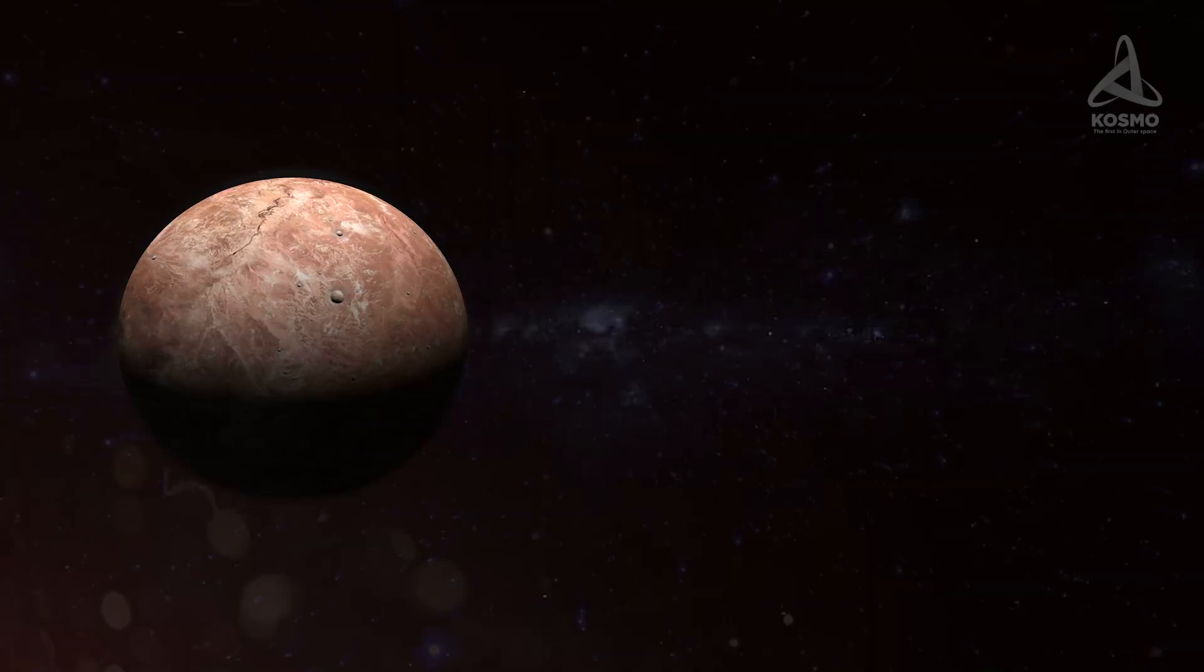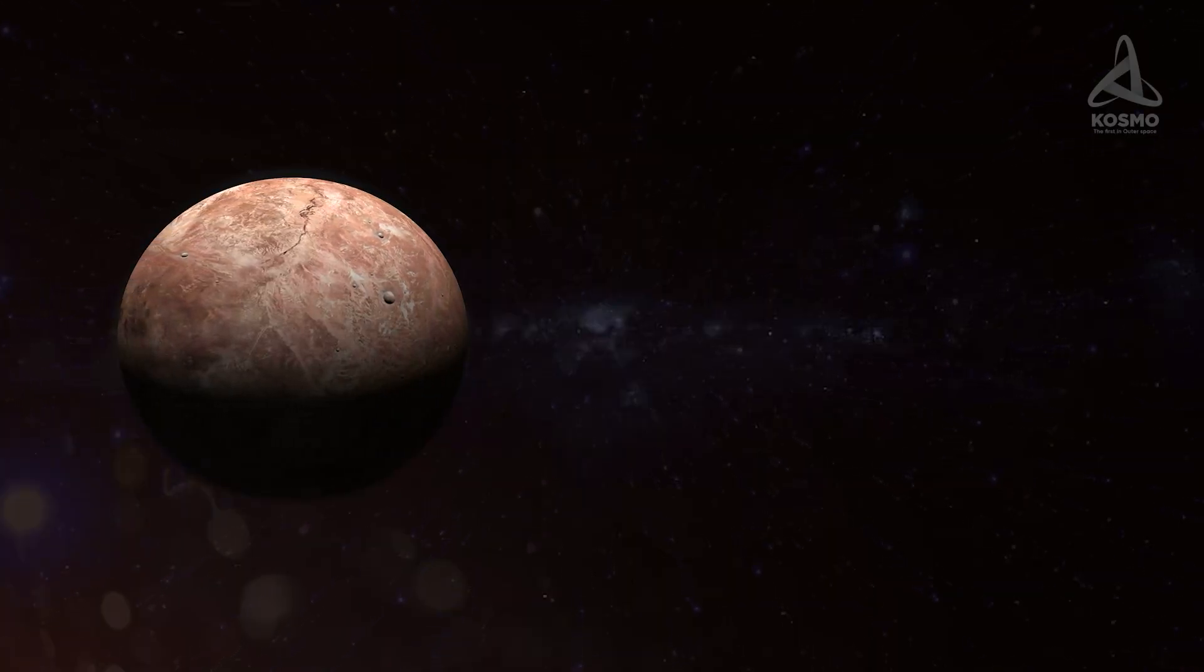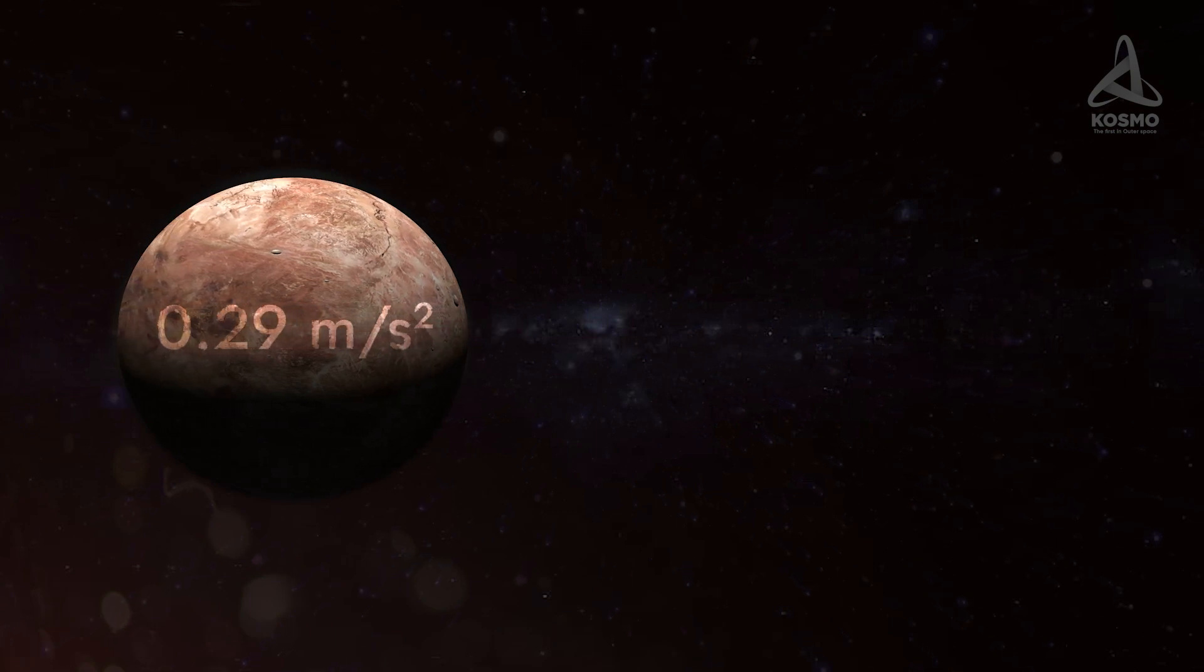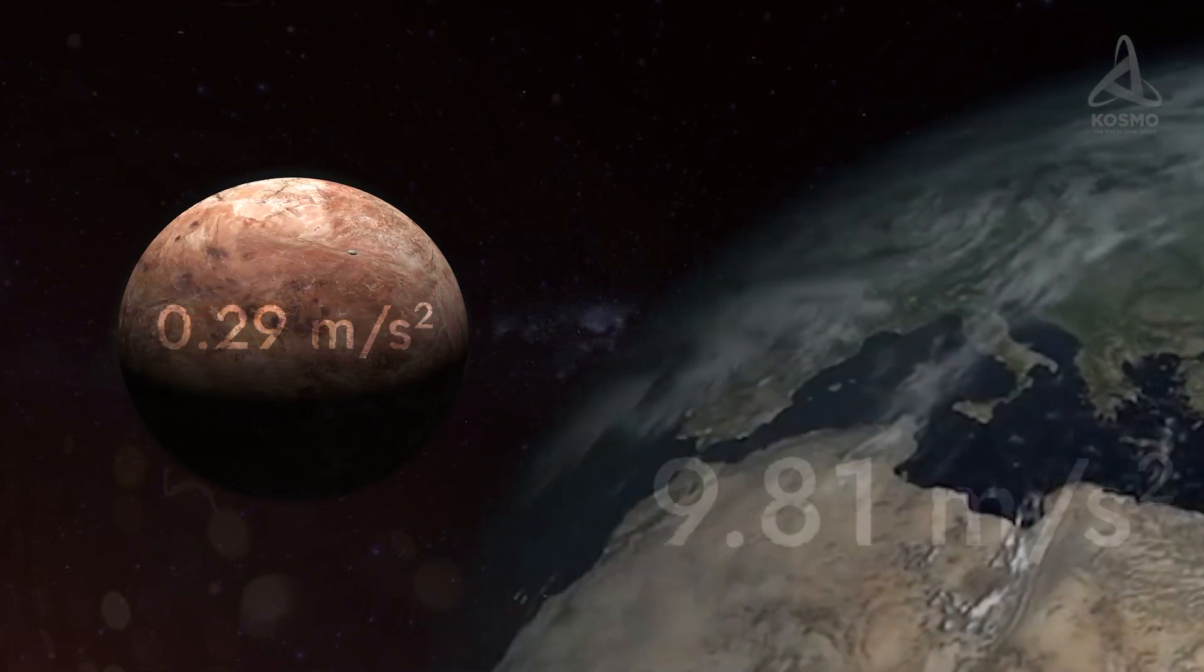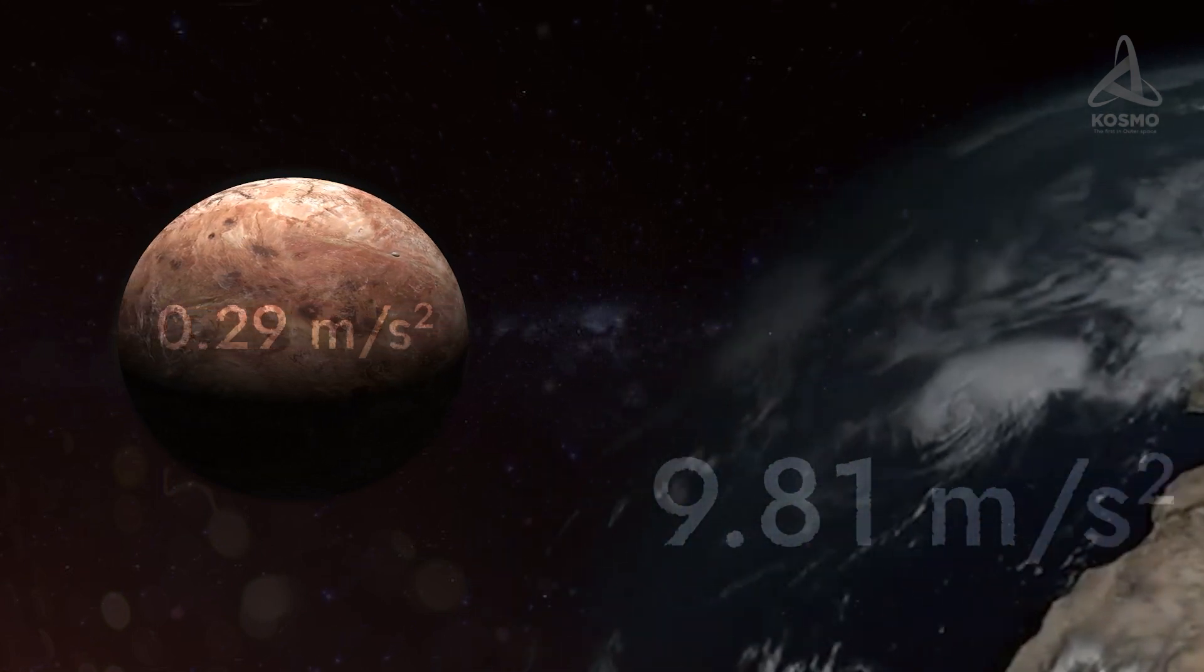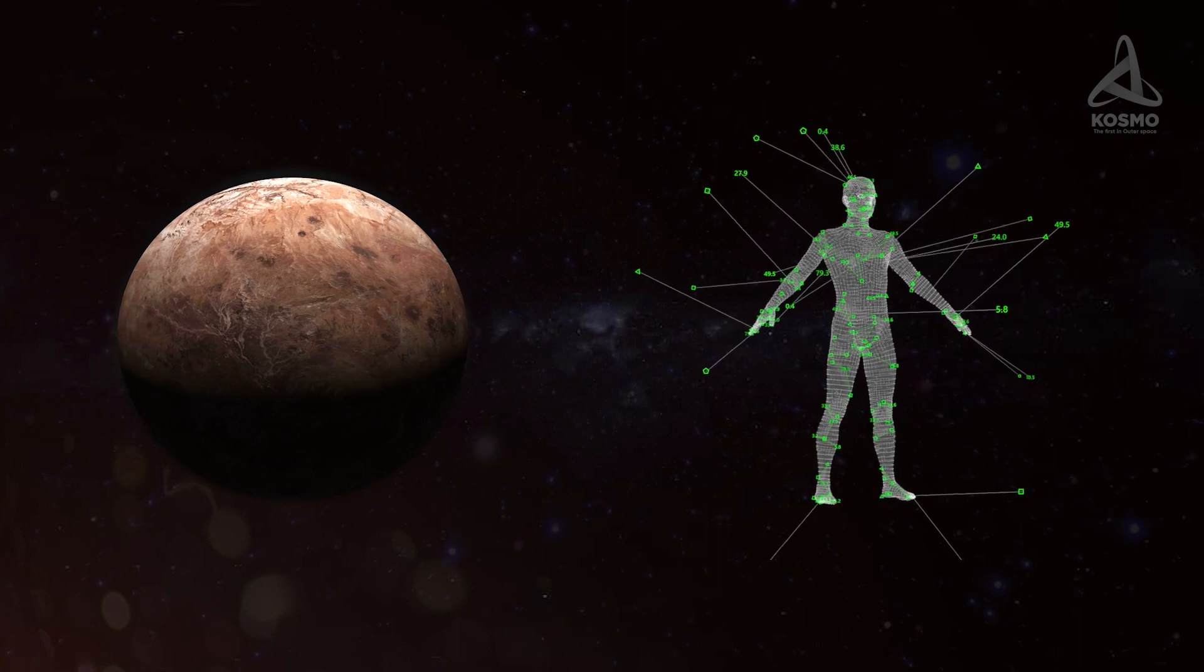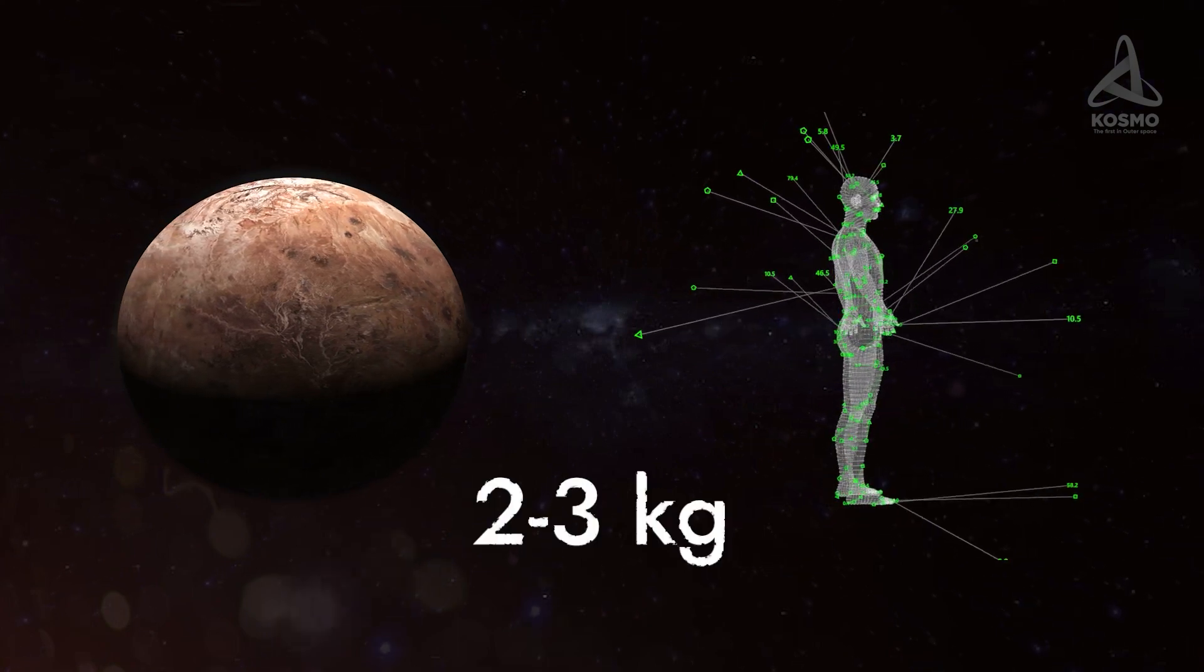The free-fall acceleration on Quaoar's surface is estimated at a measly 0.29 meters per square second, which is about 33 times slower than our planet. This means that when hypothetically placed on the planetoid's surface, a human would weigh just 2 or 3 kilos.